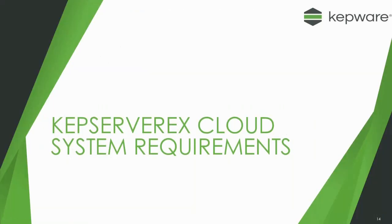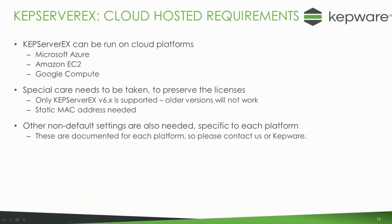For a cloud environment, Kep server can be run on various cloud platforms: Microsoft Azure, Amazon EC2 and Google Compute. Special care needs to be taken when running it in these environments to make sure the license doesn't break. Only version 6 of Kep server is supported — you can't run it on the later versions of 5 like you can with VMs. You need a static MAC address and there are various other non-default settings specific to each platform. If you are using Kep server in a cloud-hosted arrangement, speak to us and we'll provide you with the technical documents you need to get it working in that environment.